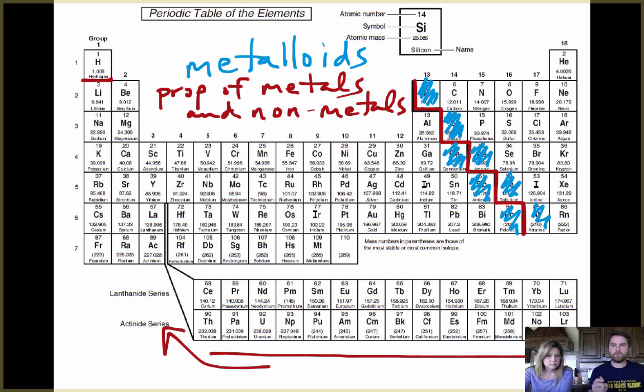All right, so those are the metalloids and then everything is going to be whatever is to the left of that and whatever to the right of that. Exactly, so everything to the left which is most of the periodic table are metals. Metals.